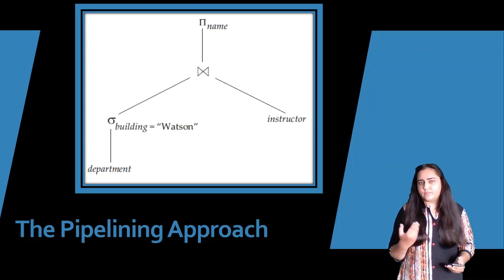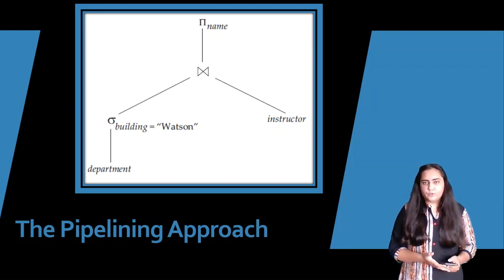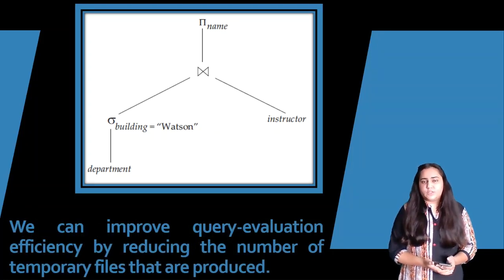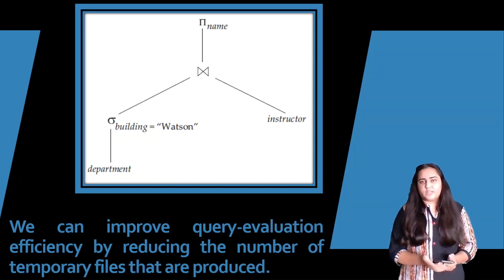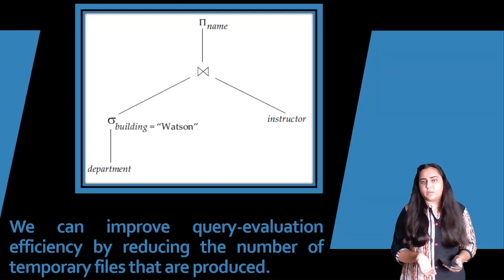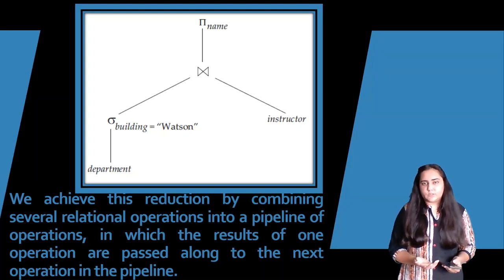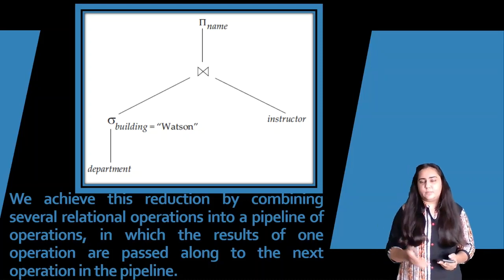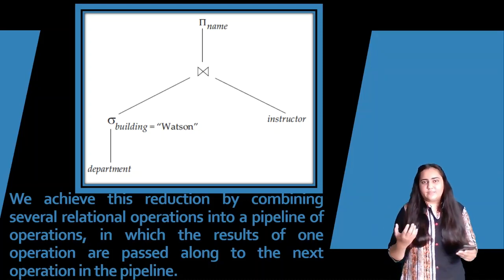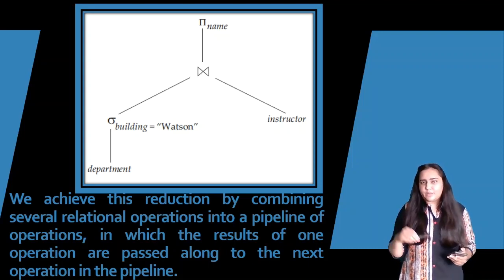The next approach to evaluate this type of expression is the pipelining approach. We can improve query evaluation efficiency by reducing the number of temporary files produced. In the materialization approach, at every step there is a temporary relation created. If we want to reduce the number of temporary relations, we can apply the pipelining operation — a pipeline of operations in which results of one operation are passed along to the next operation in the pipeline, so instead of moving step by step and creating one relation at a time, here a pipeline is created and each row of a table passes through it.